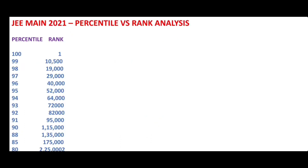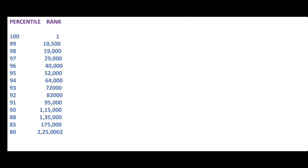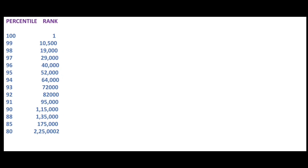Here is the analysis of expected percentile versus rank. If a student scores the 100 percentile, he will get the All India first rank. If a student breaches the 99 percentile, he will get the rank below 10,500. If one scores 98 plus percentile, one gets the rank below 19,000. For 97 percentile, one can get the rank comfortably below 29,000. For 96 percentile, the rank is around 40,000.